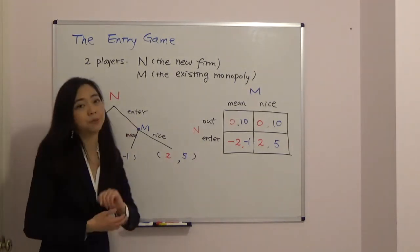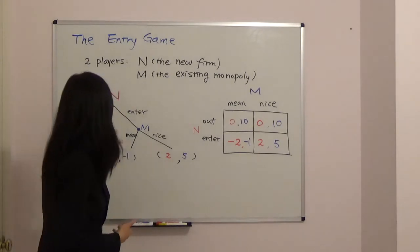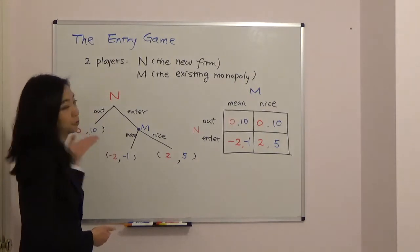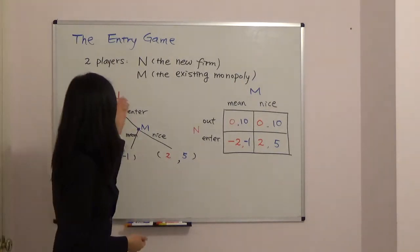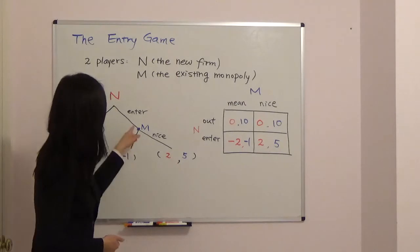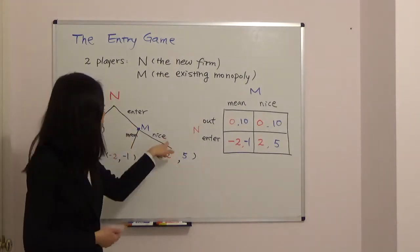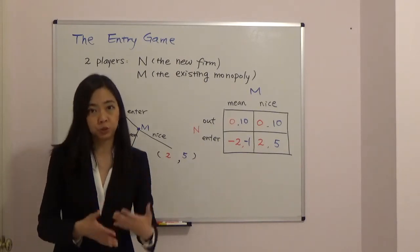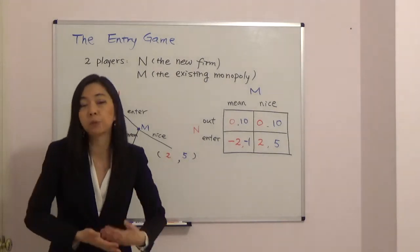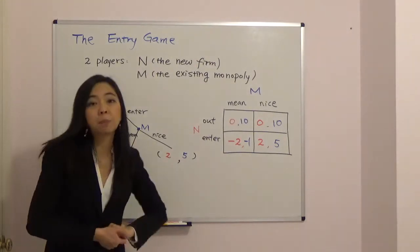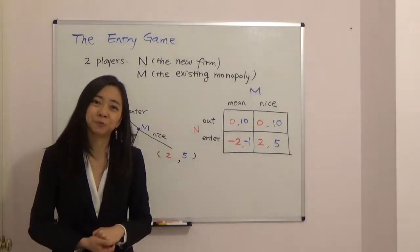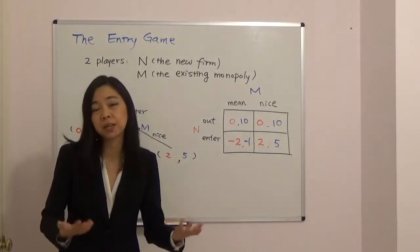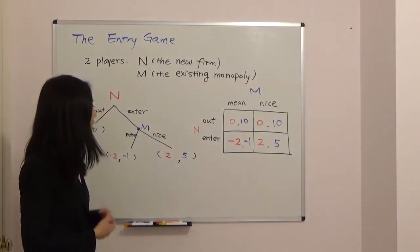If the new firm chooses to stay out, the game ends and the payoffs are realized. If the new firm chooses to enter, then the monopoly can choose to play nice or to play mean. Mean means the monopoly starts a price war and cuts the price a lot, so both the monopoly and the new firm suffer a big loss. Playing nice means not cutting the price too much, so they can both share the market.